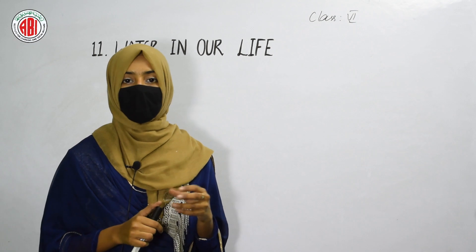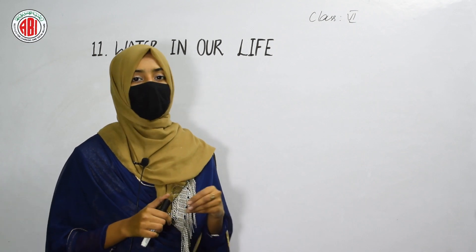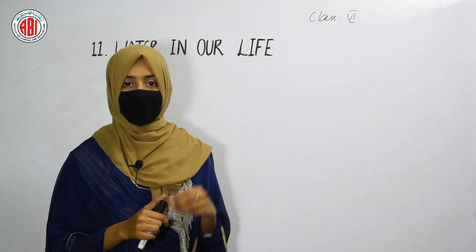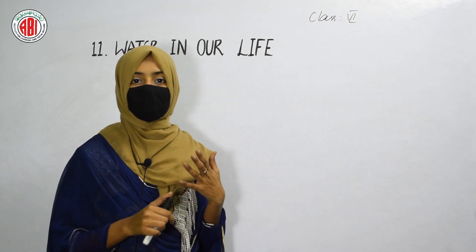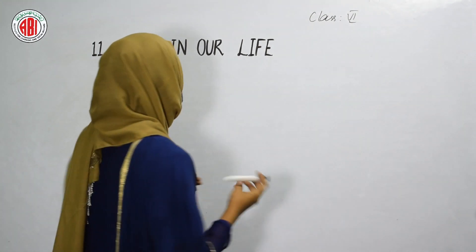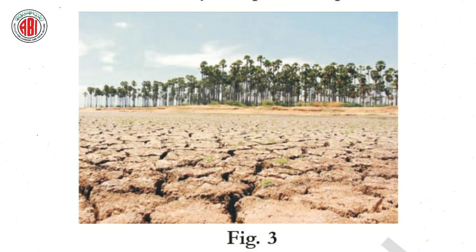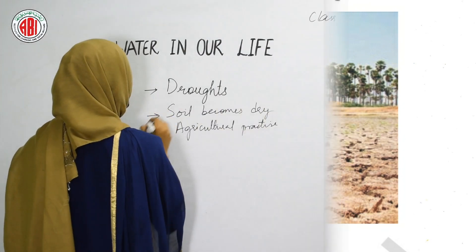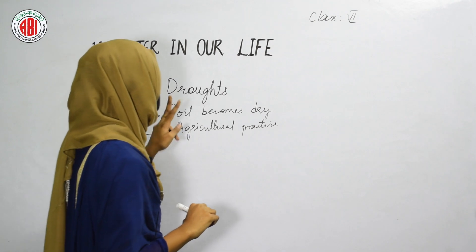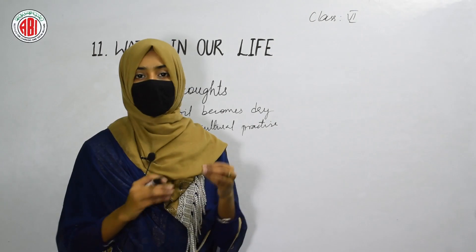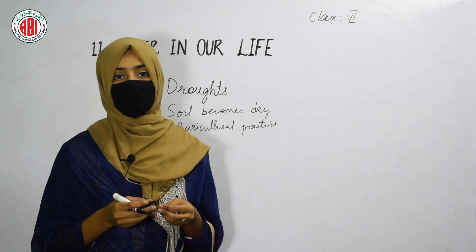When water availability in a particular area becomes scarce and the soil of that area becomes dry, we cannot do any agricultural practices in that soil. That condition is called drought. Droughts are conditions where the availability of water becomes scarce, the soil becomes dry, we cannot do any agricultural practices, and the land becomes waste.